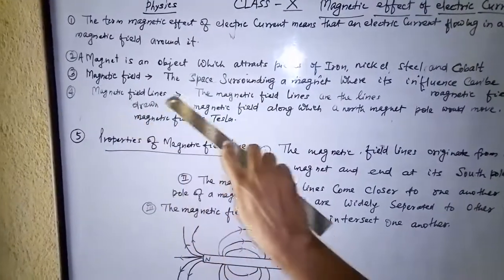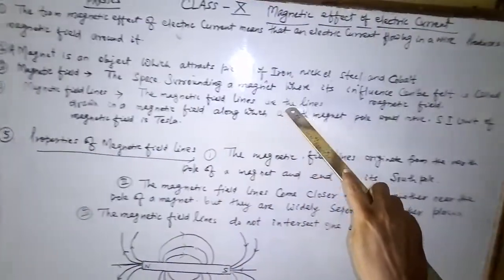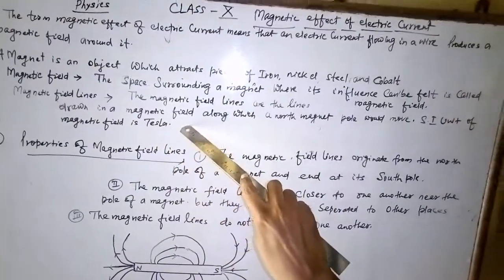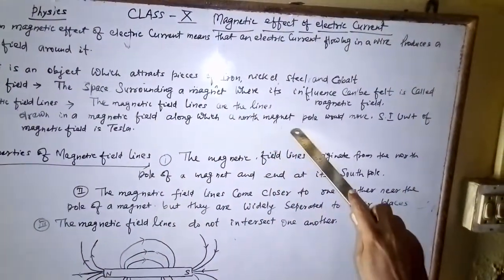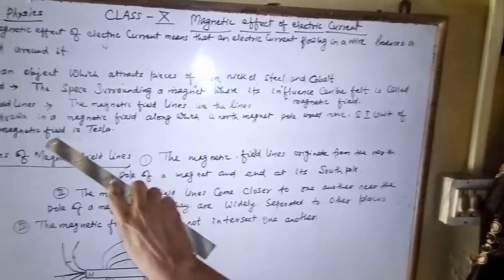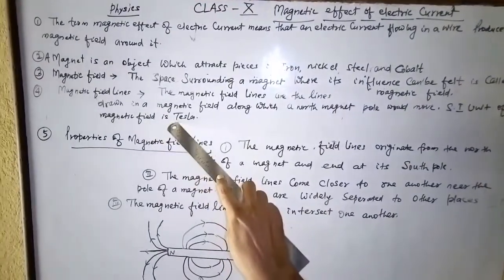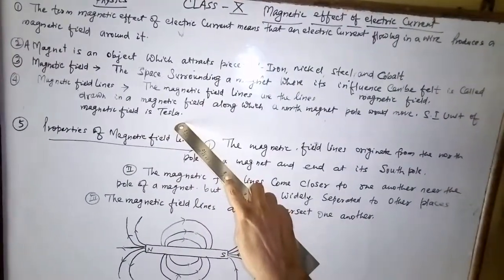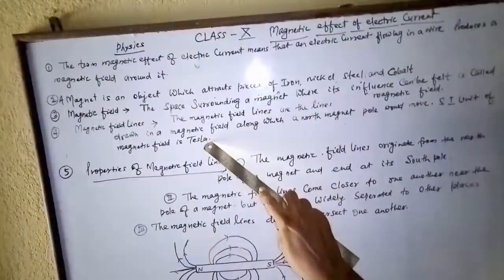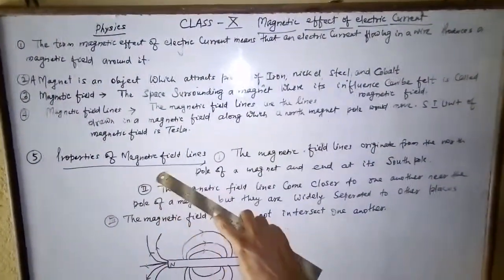Now, magnetic field lines. The magnetic field lines are the lines drawn in a magnetic field along which a north magnetic pole would move. The SI unit of magnetic field is Tesla. This is important for one-mark questions.